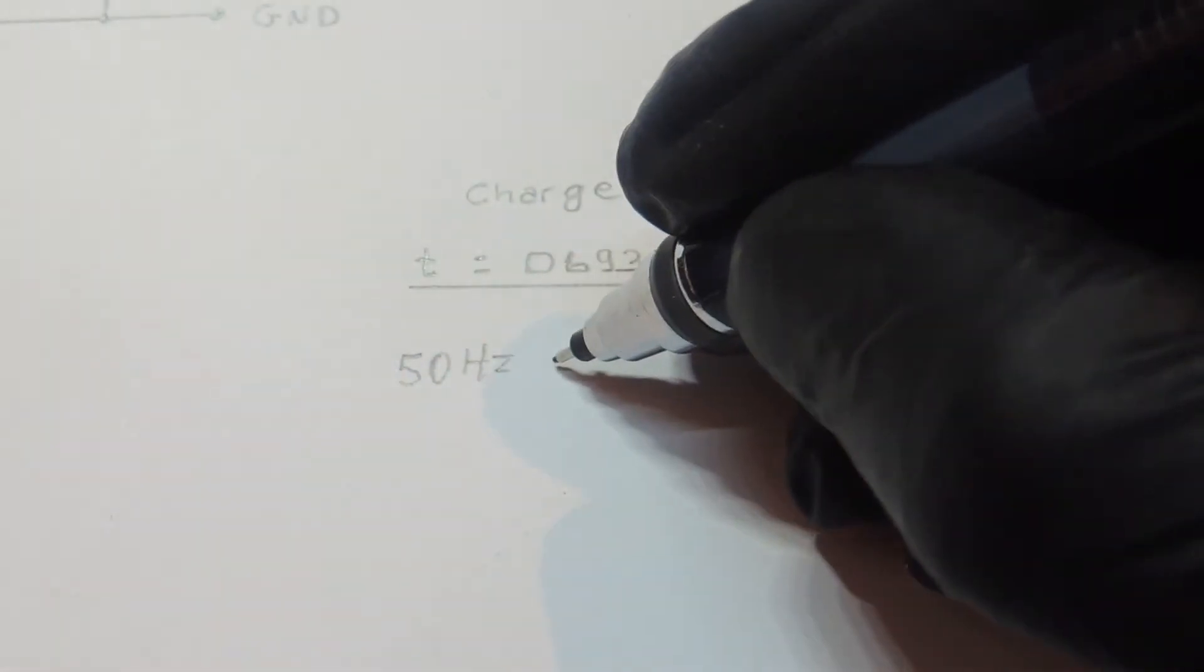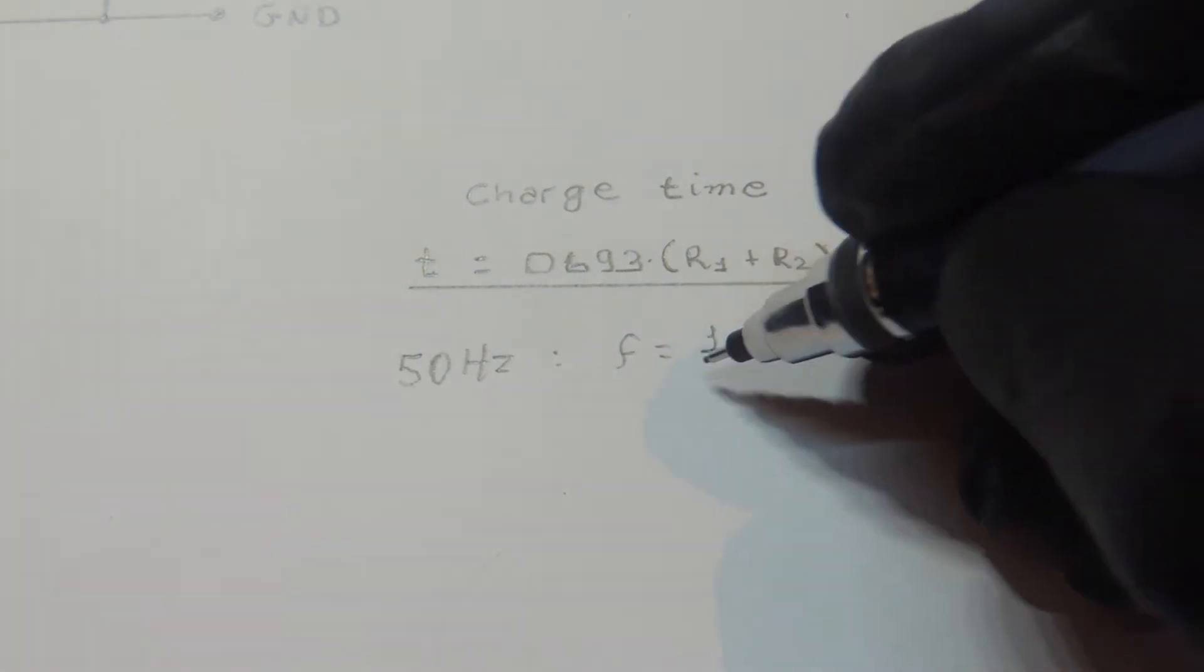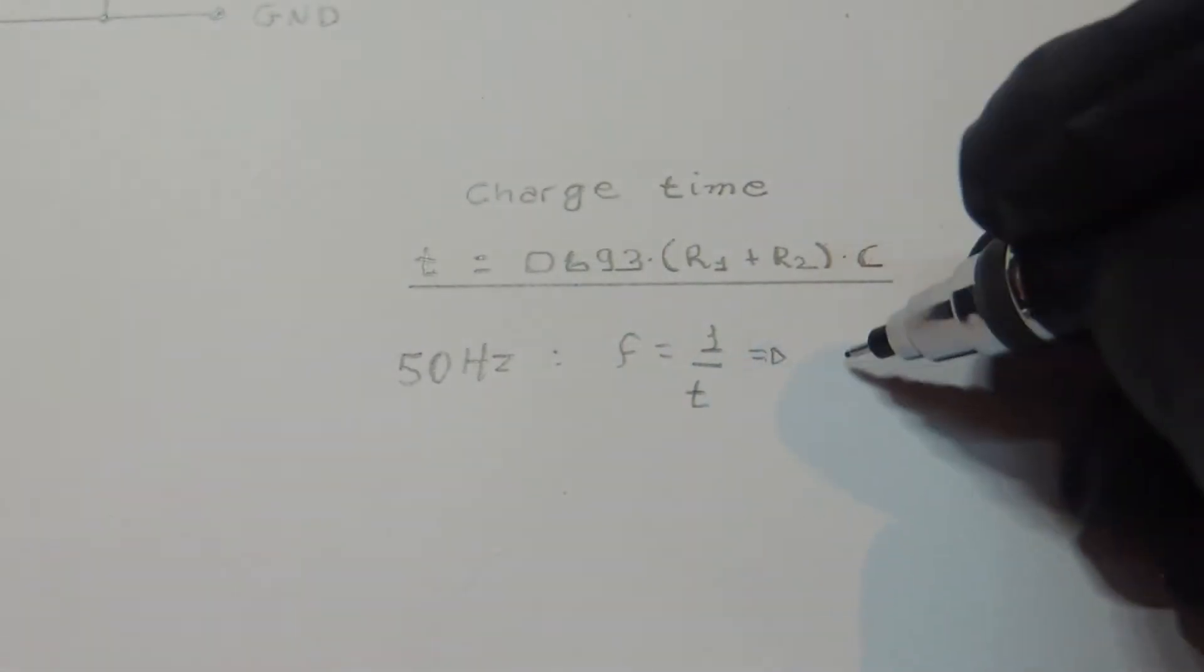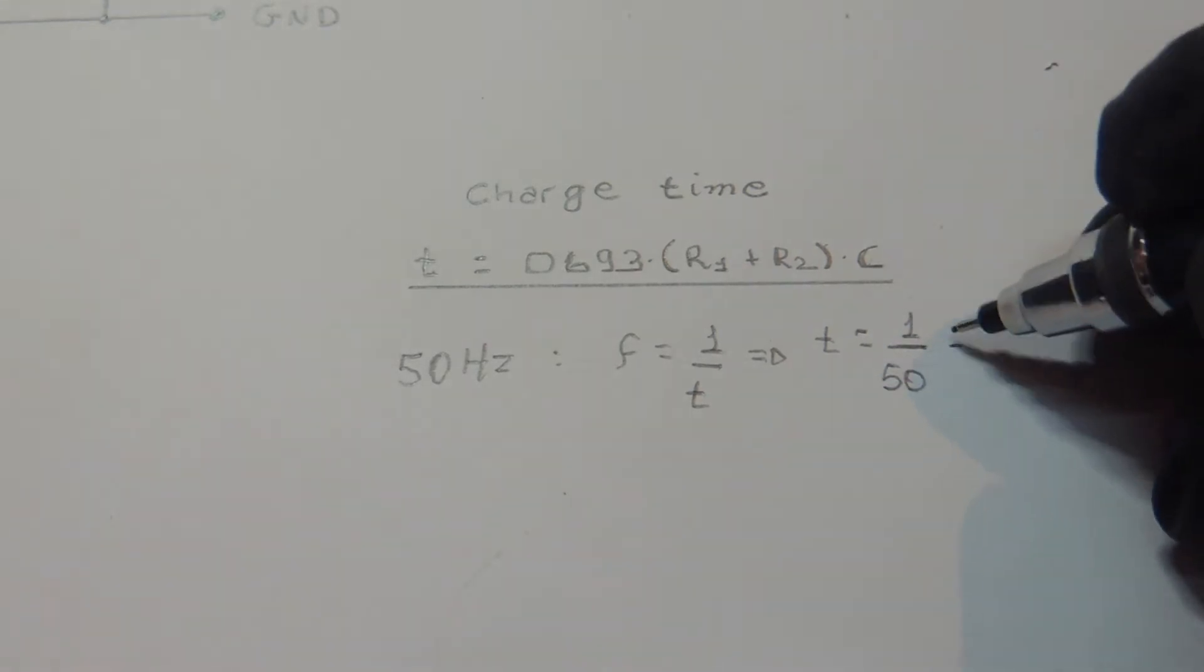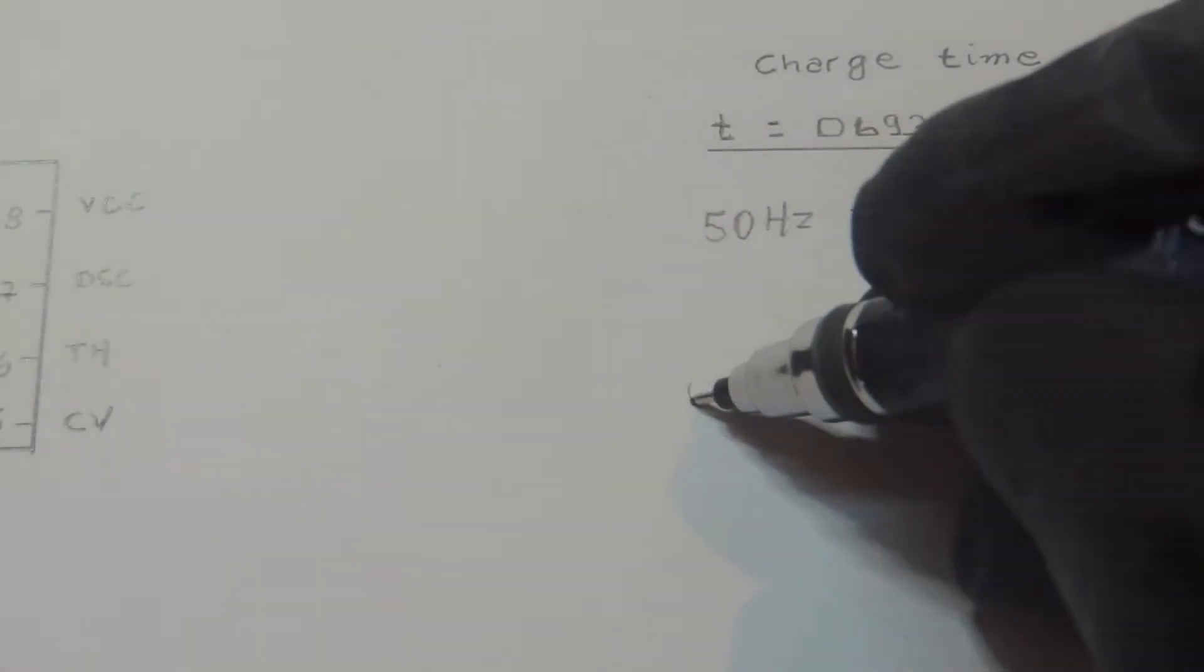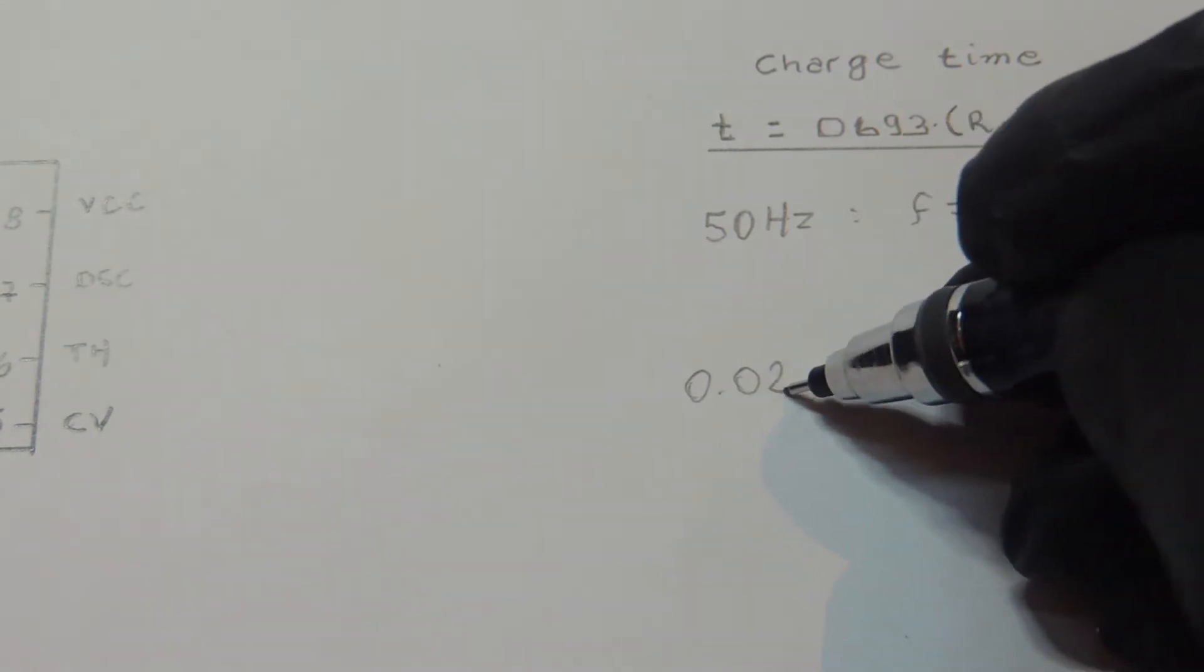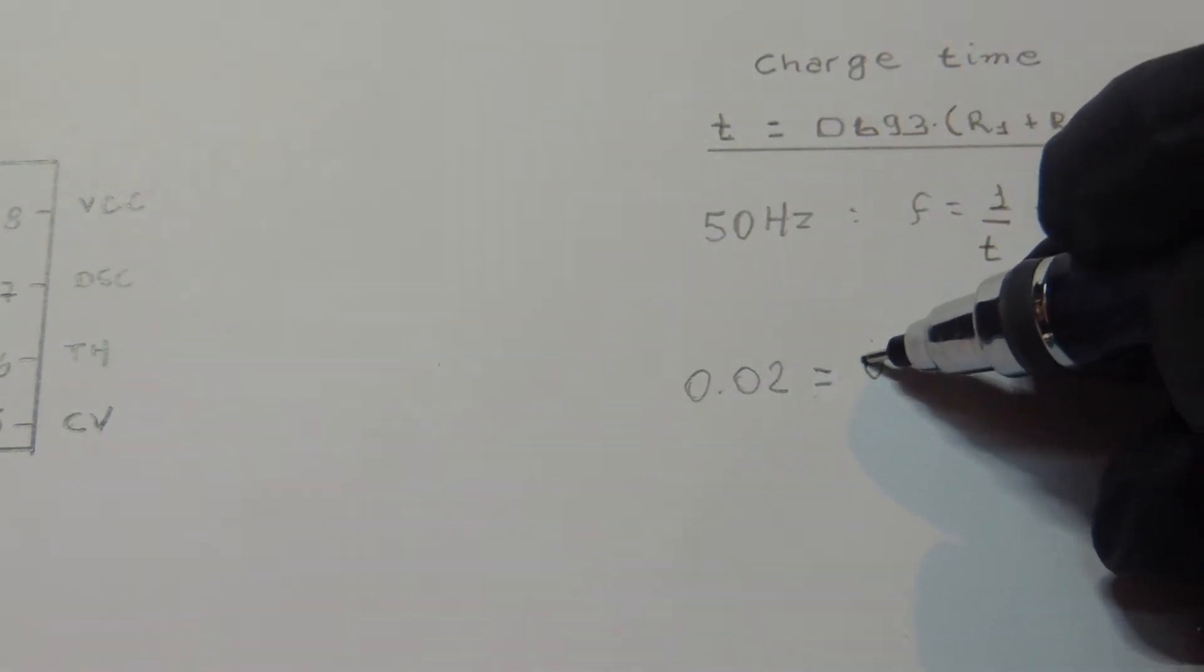We know that our servos work at 50 Hz. And we also know that the frequency is given by 1 divided by period. So our period is 1 divided by 50, which gives a value of 20 ms. Now if we place this value in the formula, we will be able to find out the value for the components.